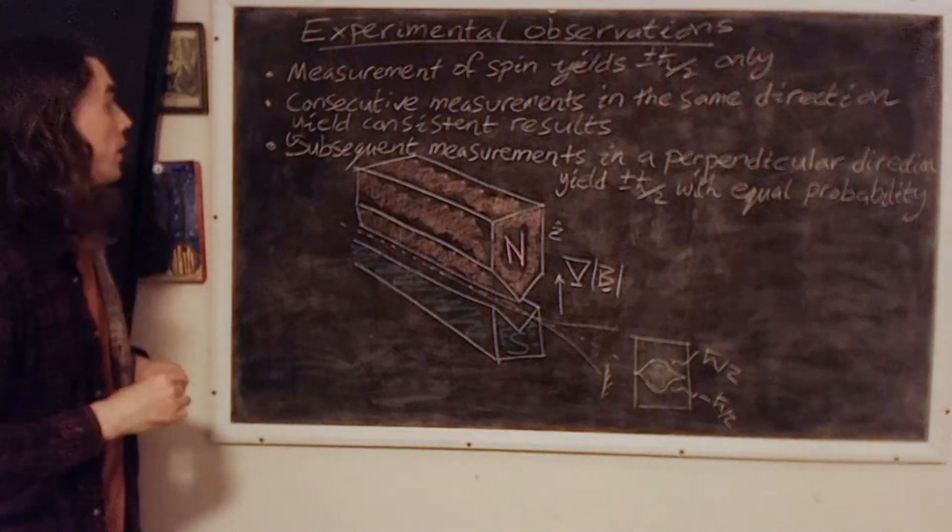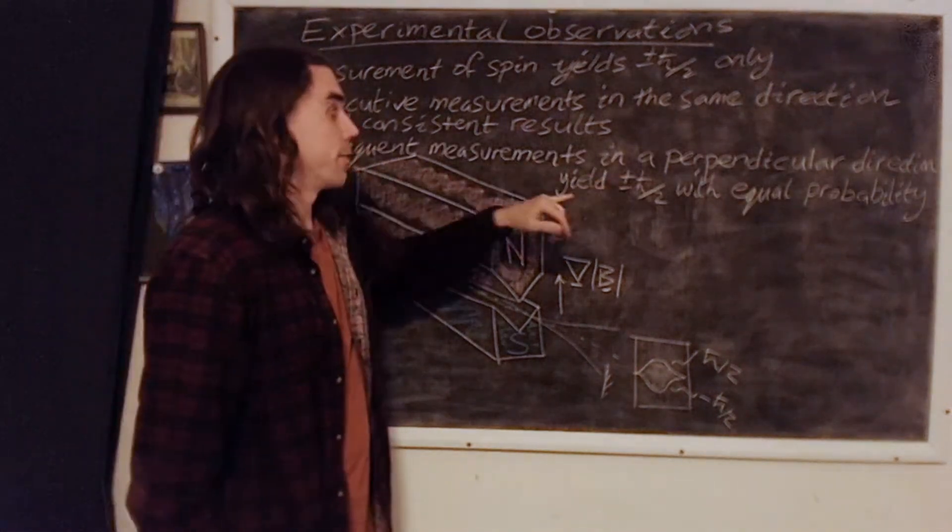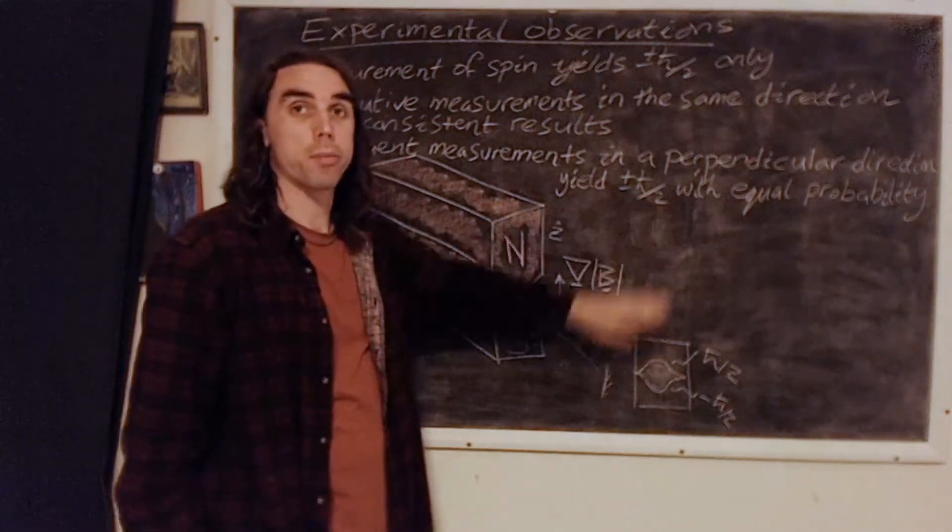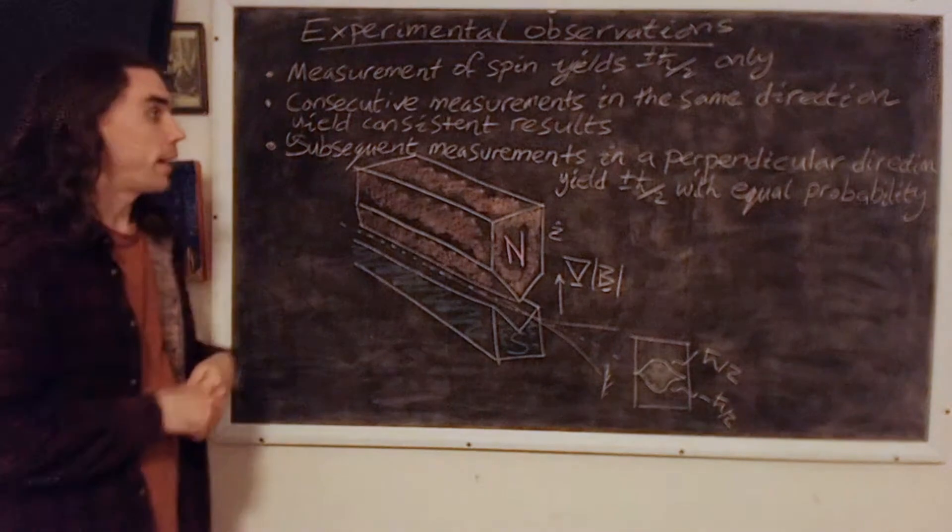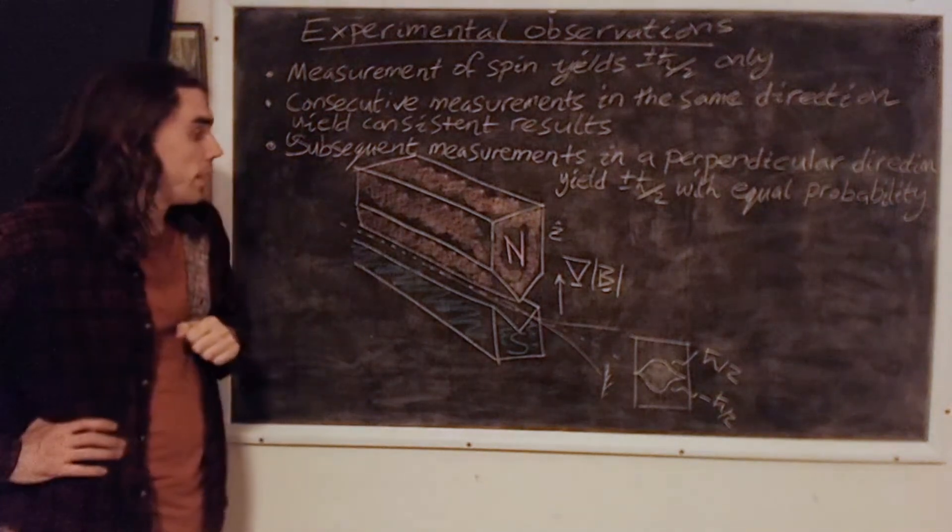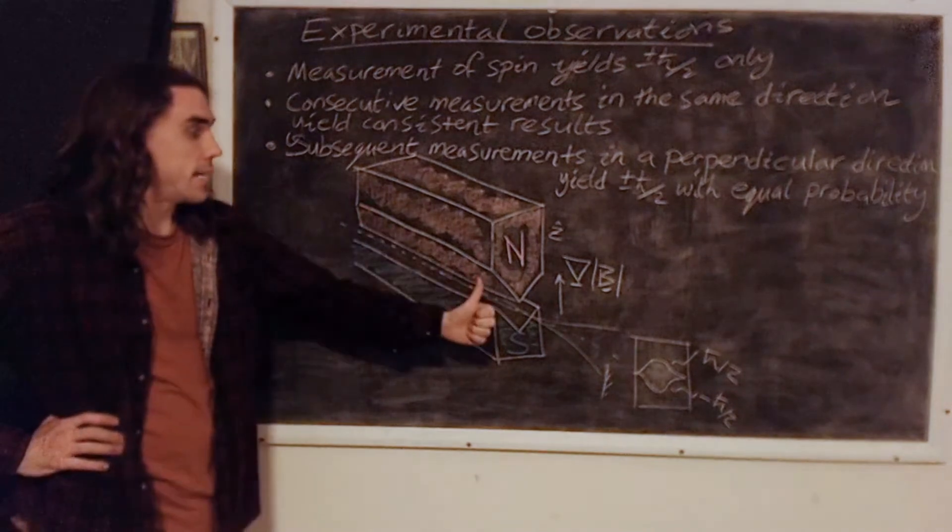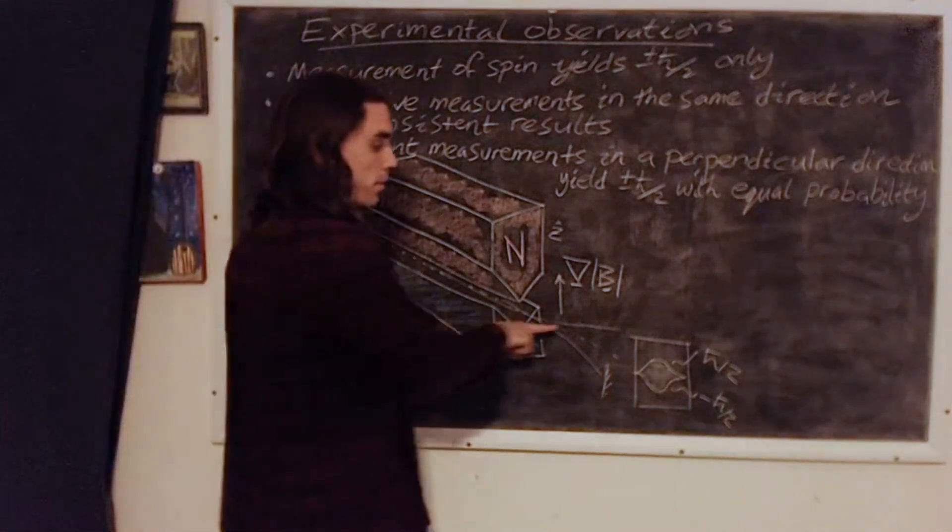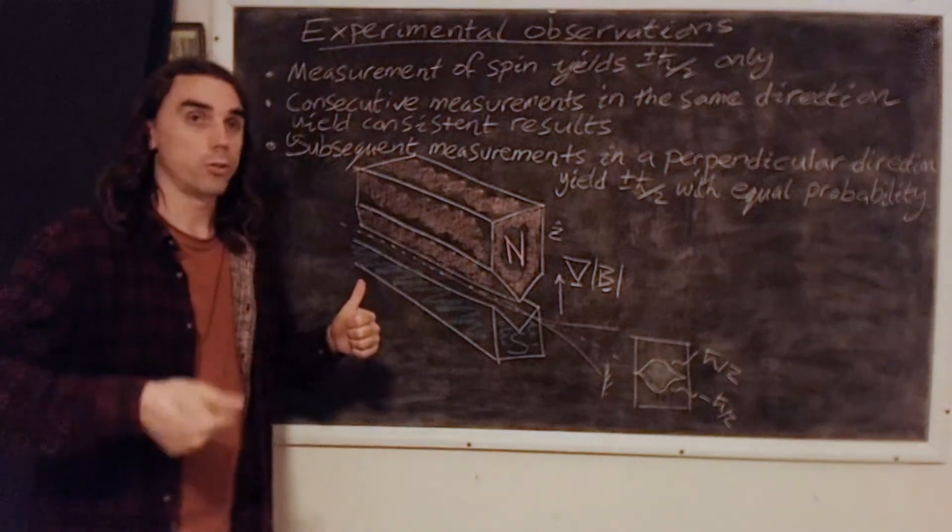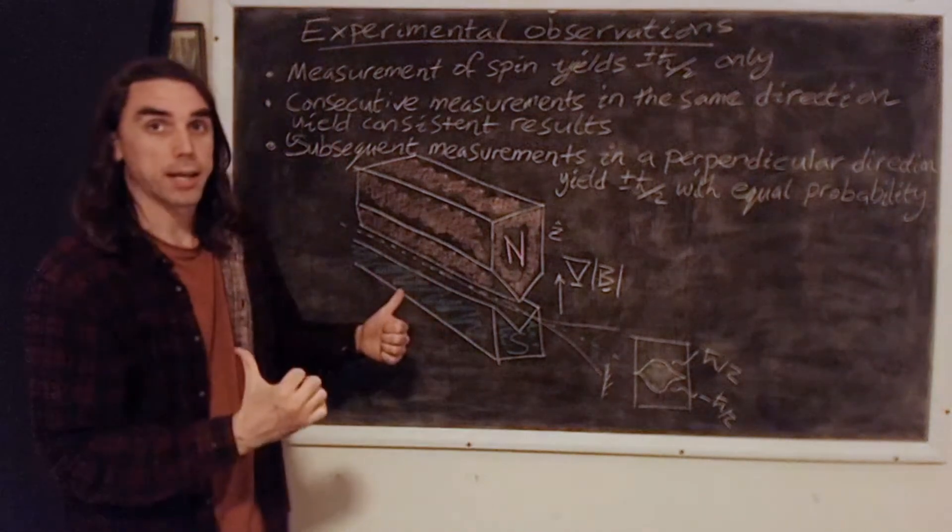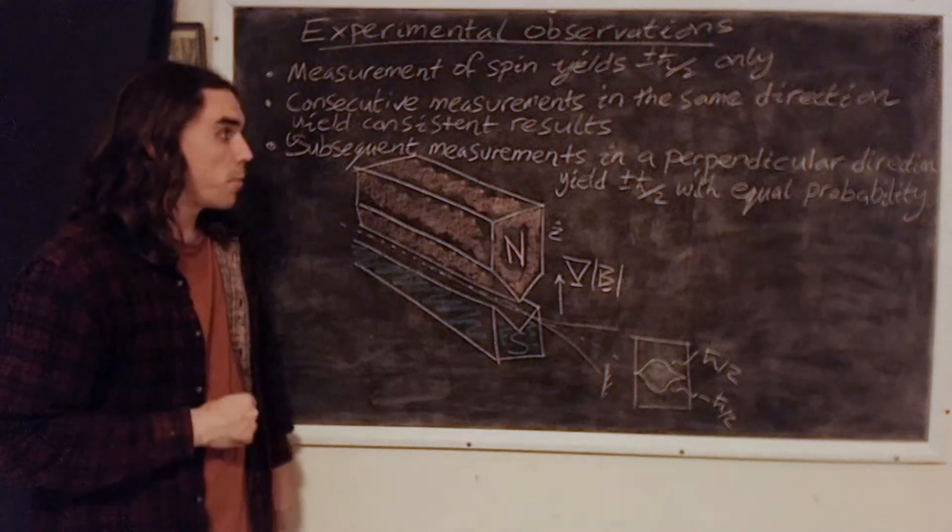However, subsequent measurement in a perpendicular direction yields either the value plus or minus h-bar over 2 with equal probability. So that's the real clincher here. If we measure the spin in z, and then we pass our spin-polarized beam plus h-bar over 2 through a measurement in x, we'll have equal probability for it to be plus a half or minus a half.